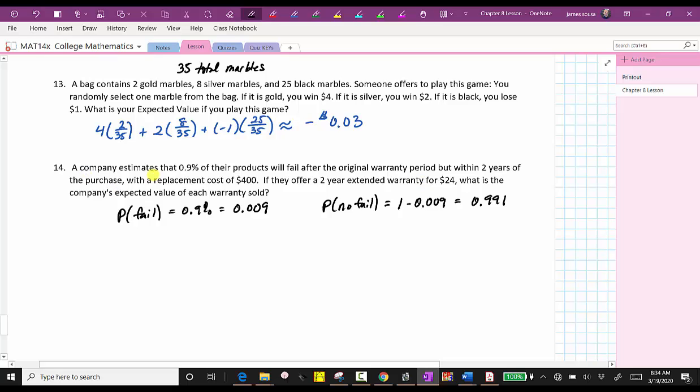Now one outcome is the product fails, and the company has to replace the product at a cost of $400. If they don't lose all that money, because the customer would have had to purchase the warranty for $24. So if the product fails, the outcome is negative 400 plus 24. The negative 400 is the cost they have to pay to replace the product, but they do get $24 because the customer did purchase the warranty. So this is the outcome if the product fails, and then we multiply this by the probability of failure, which is 0.009 plus, the second outcome would be the product does not fail, and therefore the company does receive the warranty cost of $24, which would be plus 24 times the probability of no failure, which is 0.991.